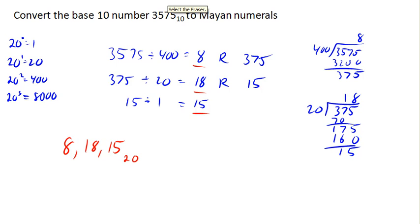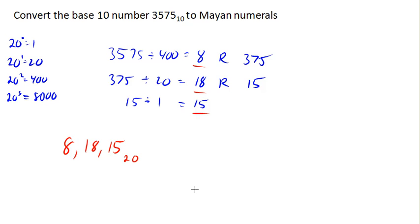Okay. So now that we know what our number is in base 20, we can go and draw it in the Mayan number system. So these are our 1s. The 1s go on the bottom. Remember, a line is used to represent 5 and a dot is used to represent a 1. So to get 15, I'm gonna draw 3 lines along the bottom.